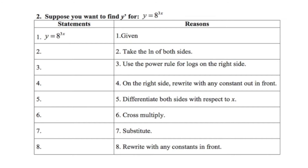In question number two, we're asked to find the derivative of another exponential function whose base is not e — in this case, it's eight. But this time the power is something a little bit more complicated than just an x; it's 3x. So let's do this proof to see what the outcome is going to be, and maybe we can create a generalized formula. We'll start with y equals 8 to the 3x and begin by taking the natural log of both sides.